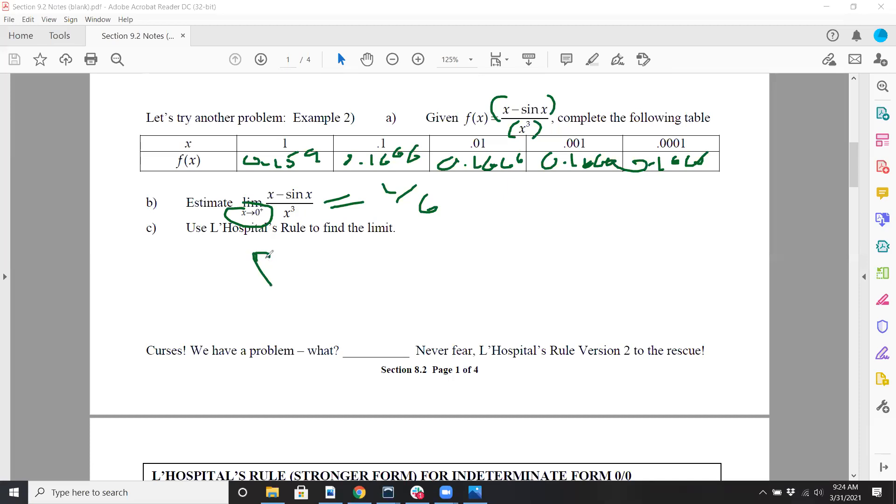Now we can't use any fancy kind of rules or techniques to evaluate this as x approaches 0 from the right side. But you could just do L'Hôpital's rule. So we'll do the limit as x approaches 0 plus. I'll take the derivative, which is 1 minus cos x over 3x squared. Then plug in 0. But there's a problem. You still get 0/0.